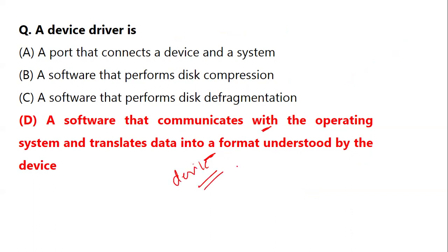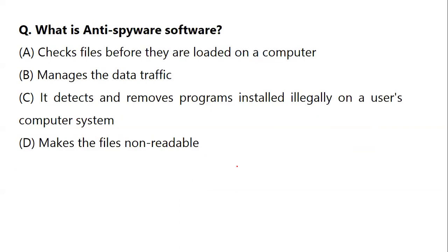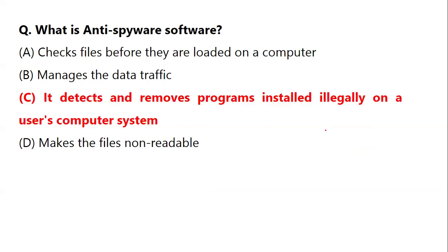What is anti-spyware or antivirus software? The options say it checks the file before it is loaded, it manages data traffic, it removes programs installed illegally, or it makes files non-readable. Antivirus software helps detect and remove programs that are installed illegally. To save your computer from viruses, you use antivirus software, which removes files that have been illegally installed in the computer.